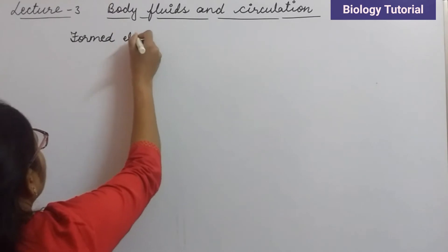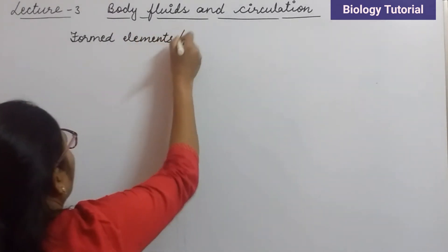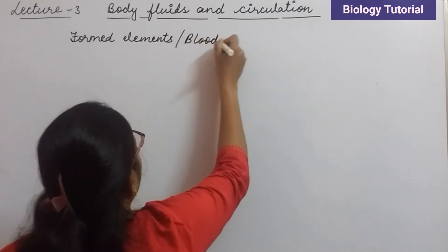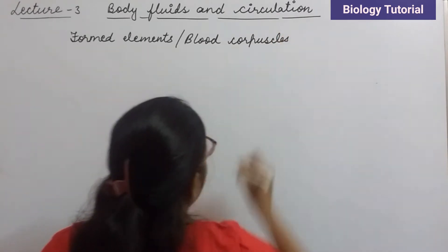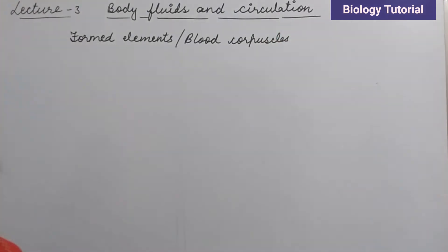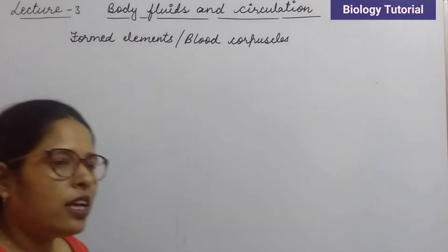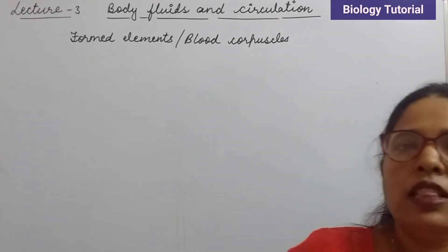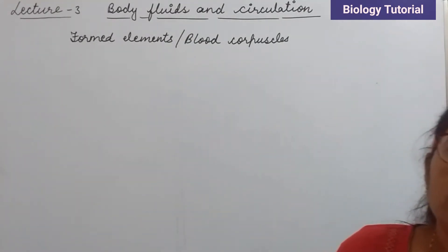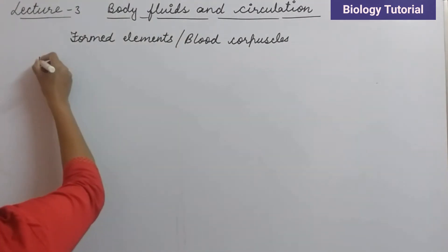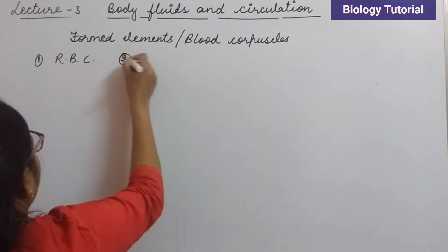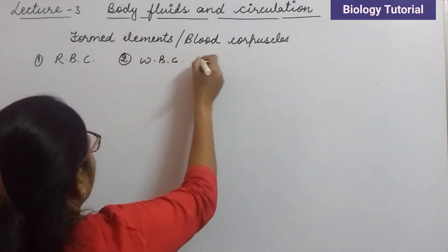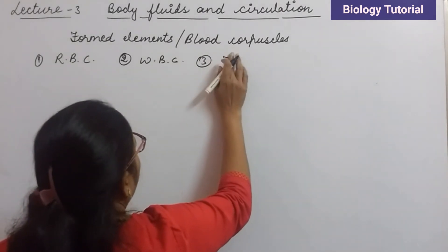Formed elements are also called as blood corpuscles or blood cells. Corpuscles means the floating cells — these cells are found floating in the blood plasma, that's why they are called as corpuscles. Basically three types of formed elements are present in the plasma of blood: first one is RBC, second one is WBC, and third one is platelets.